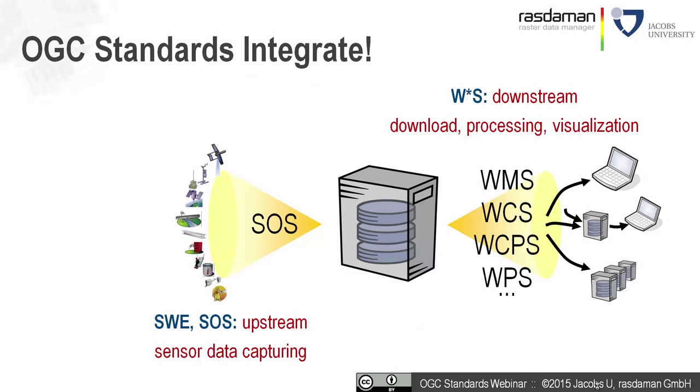The OGC set of standards helps set up integrated ecosystems of services. Upstream, we find the Sensor Observation Service, which can understand virtually any sensor hardware and transform sensor output into canonical representations — for example, into coverages. Once homogenized, downstream services kick in: WMS for visualization, WCS for data retrieval, WCPS and WPS for data processing, etc.